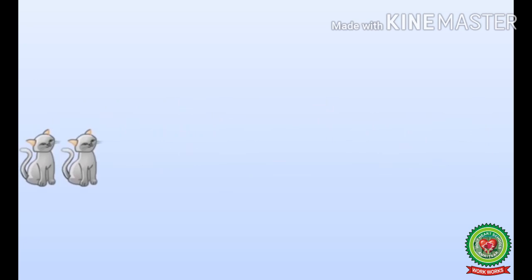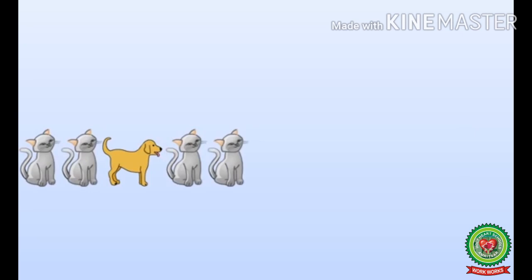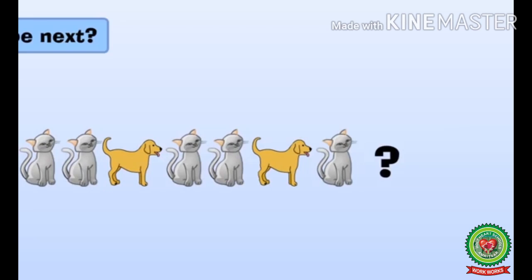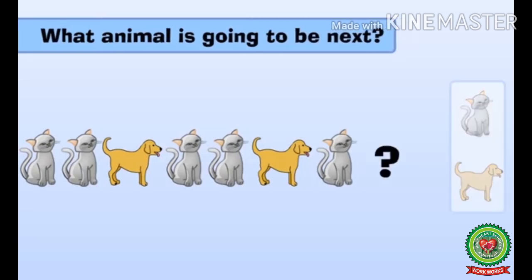Now let's do another kind of pattern: cat, cat, dog, cat, cat, dog, cat. Now what animal is going to be next — a cat or a dog? It is a dog.